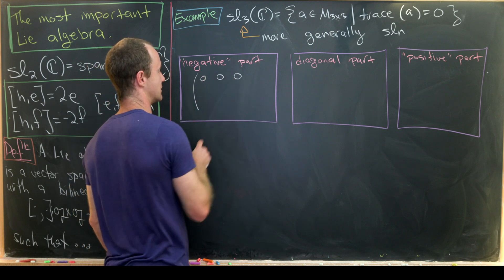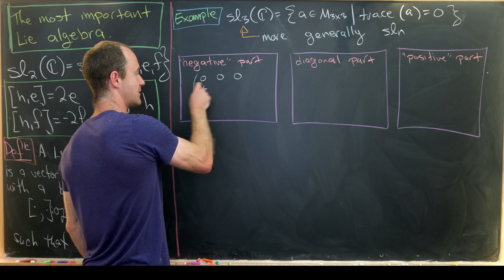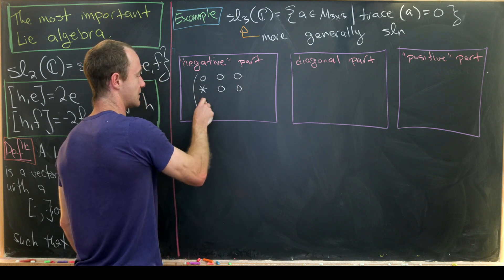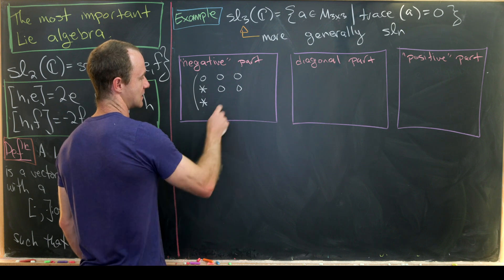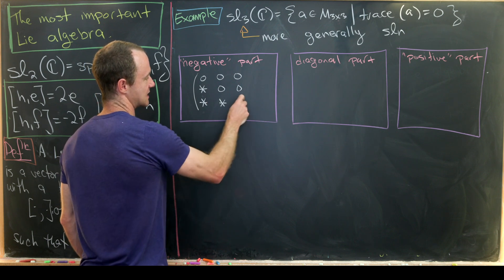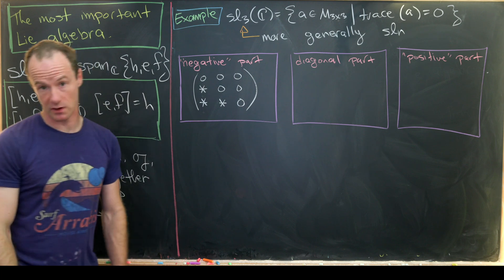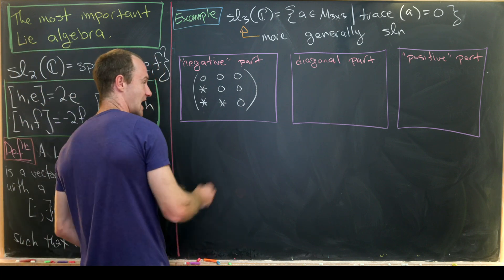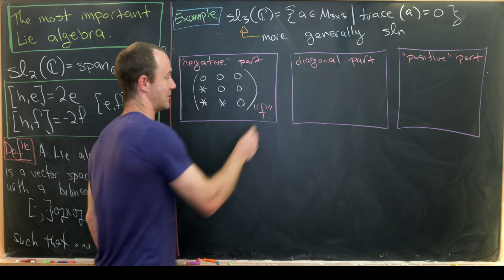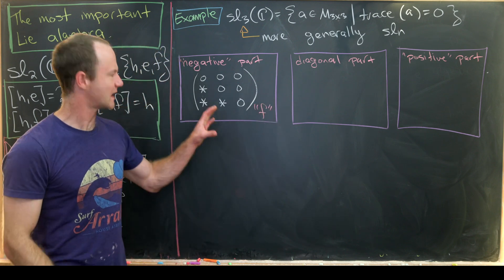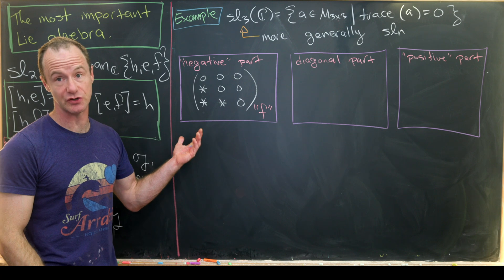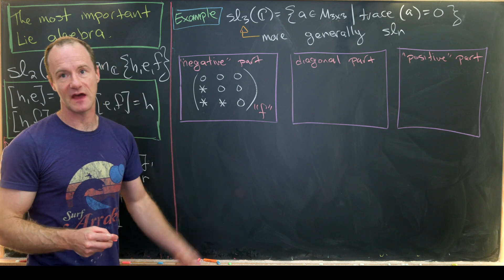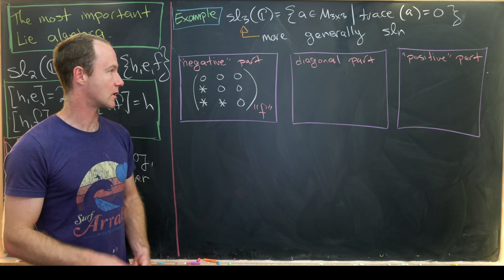For the negative part of SL3, we have matrices with zeros on and above the diagonal, and arbitrary entries below the diagonal. This is analogous to the element f from SL2: if you look at a 2×2 matrix and consider the negative part, you'd get that matrix f we looked at before.